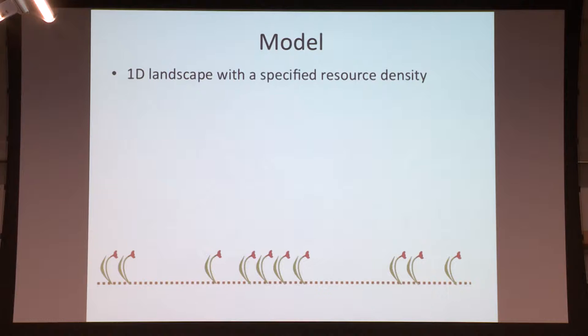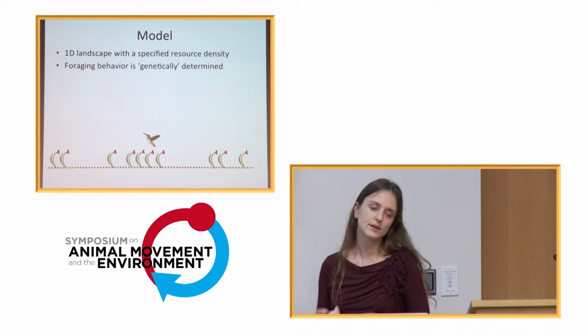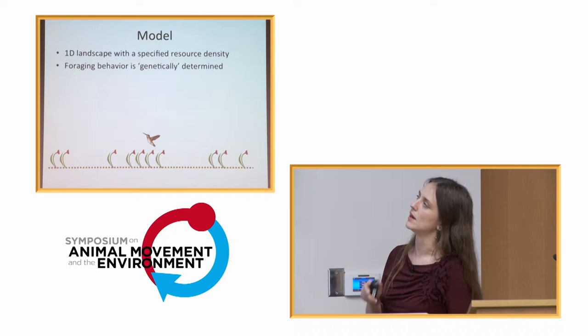To address this question, we built an agent-based model, and it's very simple — we're only going to consider one dimension. We have a one-dimensional landscape with a specified resource density. Here I've simulated a 50% filling of floral resources, so there's a one-in-two chance that any particular location has a flower. On this landscape we put foragers. These foragers have foraging rules that are genetic — we use a genetic algorithm. I don't necessarily want to imply this is a genetic mechanism; it's also just a way to find an optimal solution for a particular landscape.